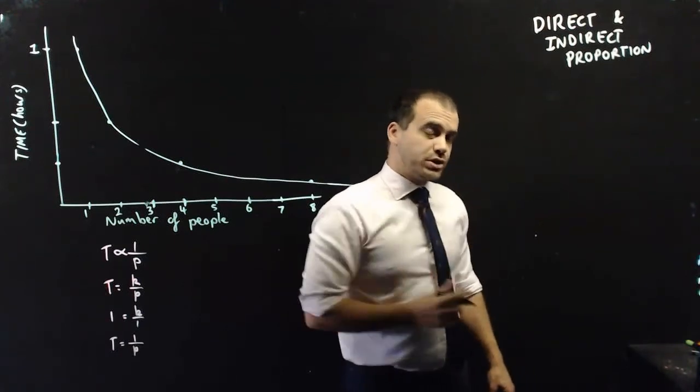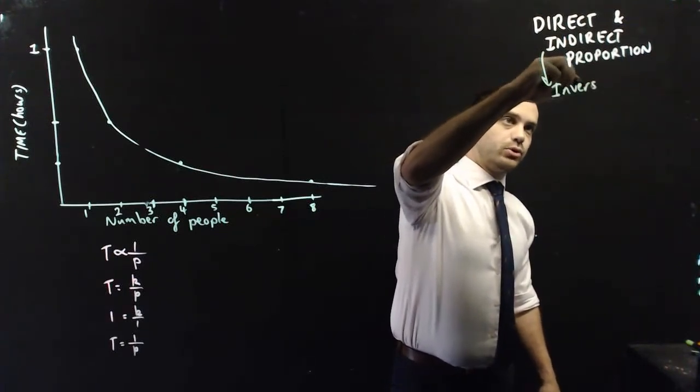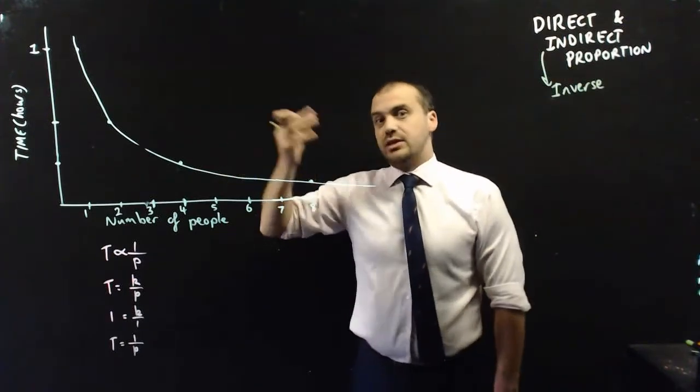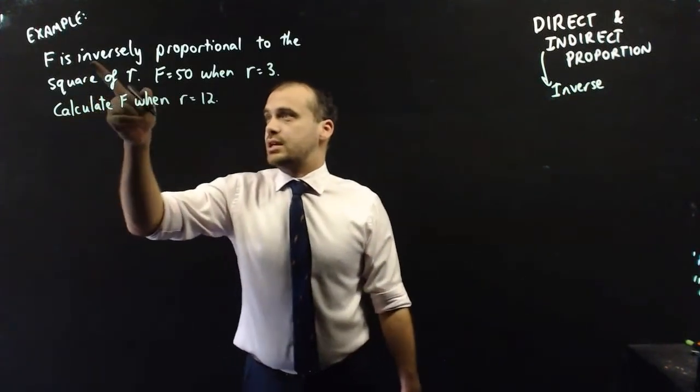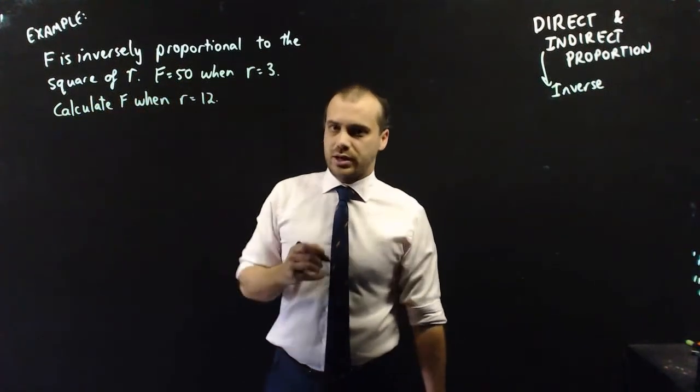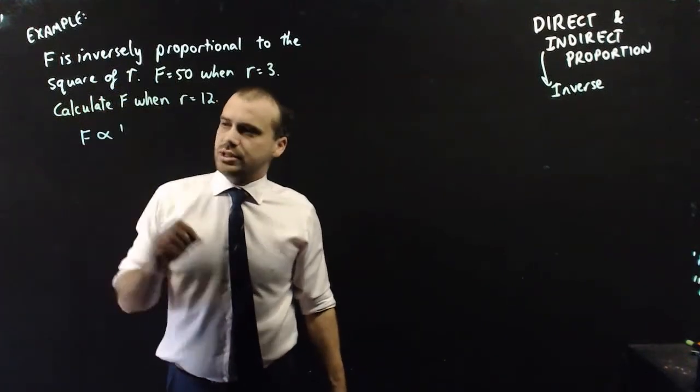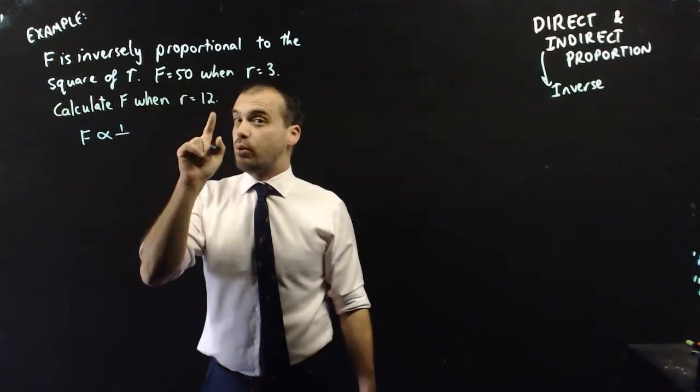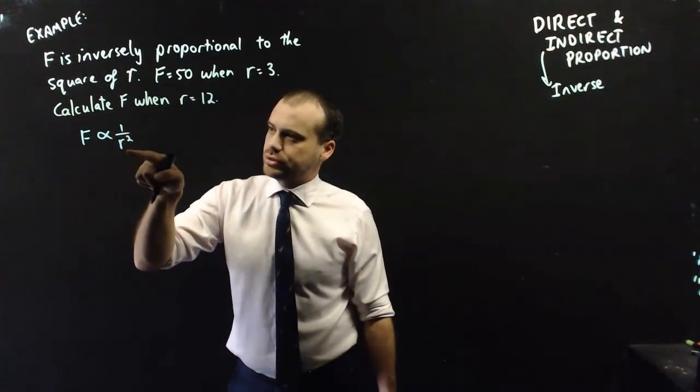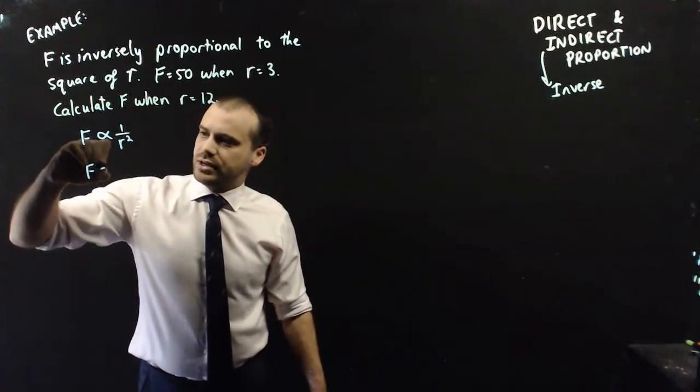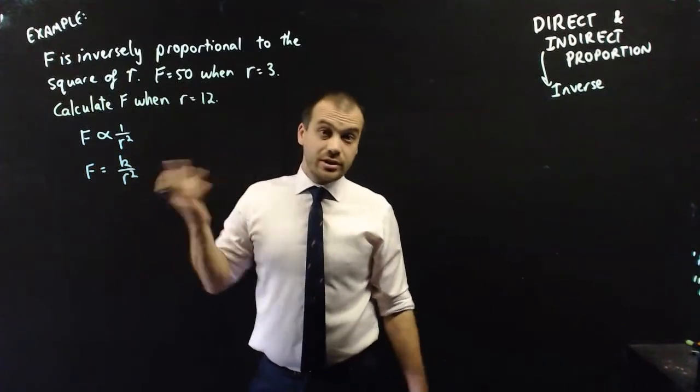Before I forget, indirect proportion is the word I'm using, but a lot of people use the word inverse proportion, and they would say that these are inversely proportional to each other. So, you might get a question like this, f is inversely proportional to the square of r. So, let's just write that formula first. f is inversely proportional to the square of r. f is inversely proportional to r squared. Now, we know that that's going to be f is equal to k over r squared. Let's keep reading the question.